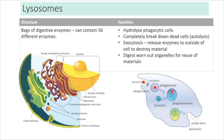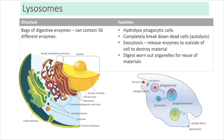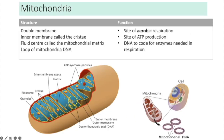Lysosomes are vesicles — bags of digestive enzymes — created by the Golgi apparatus. They function in the hydrolysis of bacteria during phagocytosis by fusing with phagosomes and releasing digestive enzymes to hydrolyse and destroy pathogens. They are also involved in breaking down dead cells. Once hydrolysis is complete, the lysosome fuses with the cell membrane and releases its contents to the outside.